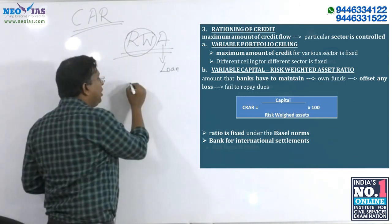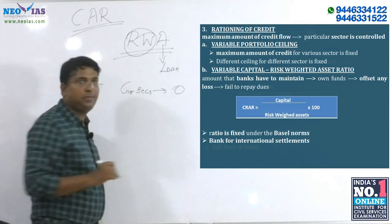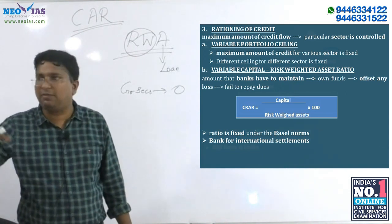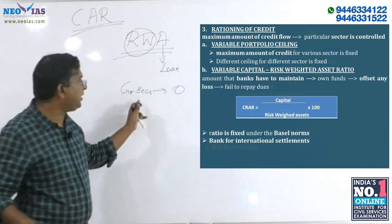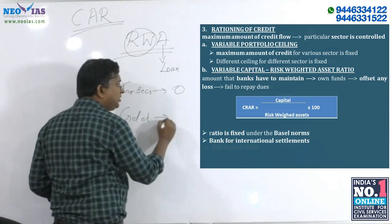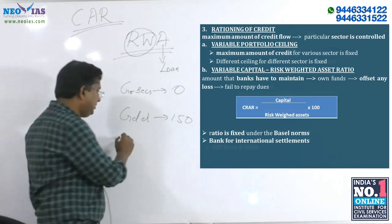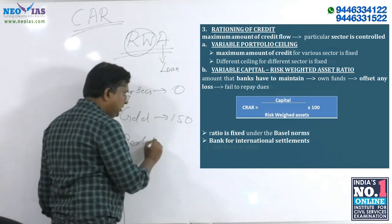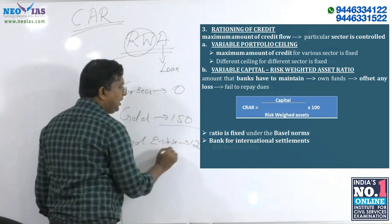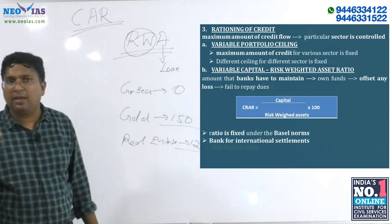For government securities, the risk-weight is zero, because there will be no default — RBI itself manages government securities. Gold has a risk-weight of 150, which is very high. Real estate has a risk-weight of 125. So for each sector, RBI will assign a risk-weight.